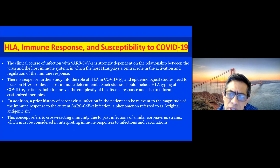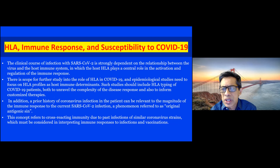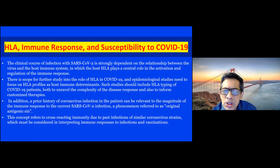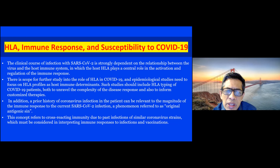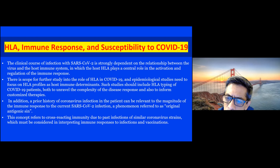From the current available immunological and HLA data, the clinical course of infection with SARS-CoV-2 is strongly dependent on the relationship between virus and host immune interactions, in which the host HLA plays a central role in activation of the immune response. There is scope for studying the role of HLA in COVID-19, and we need epidemiological studies to look at HLA profiles. Such studies should include HLA typing of COVID-19 patients to unravel the complexity of disease response and inform personalized therapies. Also, the prior history of COVID infection could be relevant in the magnitude of immune response.